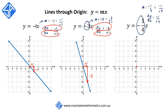We're going to move across to the right — our run Δx is plus 4. Then we're going to move downwards — Δy, our rise, is negative 1.